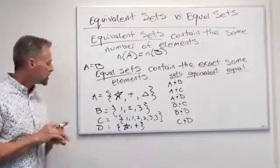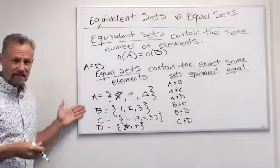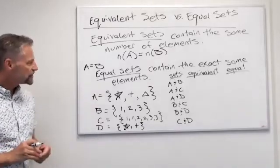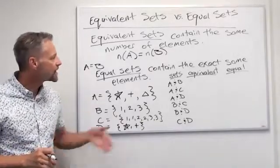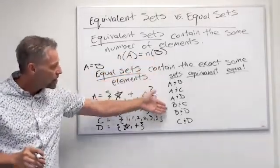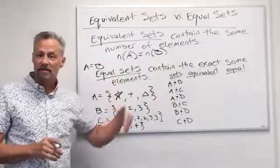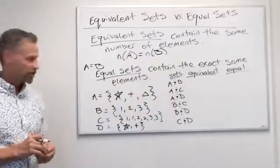So let's look — I've done four different sets, A through D, as you can see. Let's talk about matching up these sets and seeing if they're equivalent or if they're equal.